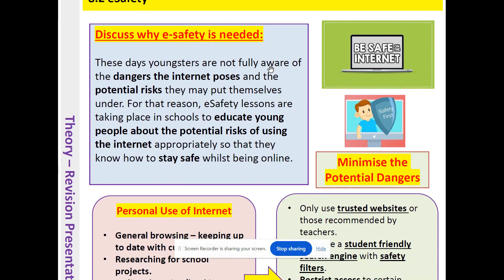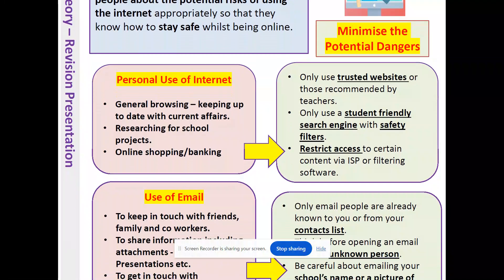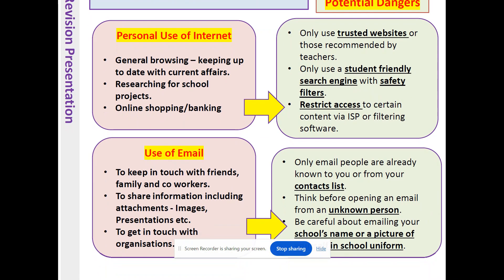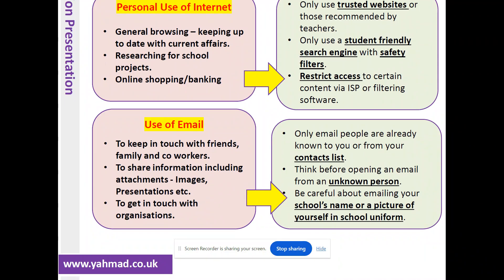So what can we do to maintain our safety online and minimize the potential dangers? Let's look at our personal use of the internet. We can use it for browsing, keeping up to date with current affairs, researching school projects, online shopping or banking. To minimize potential dangers, we can make sure we're using trusted websites or those recommended by teachers, using a student-friendly search engine with safety filters, and we can restrict access to certain content via the internet service provider or by having filtering software on your network.